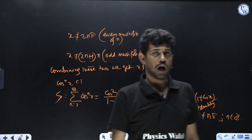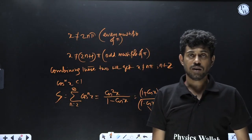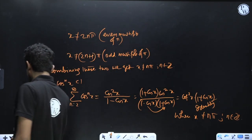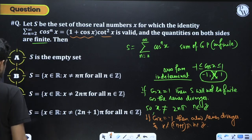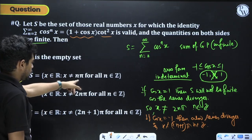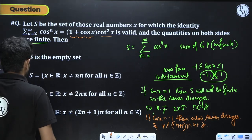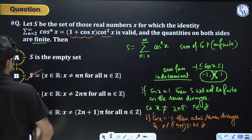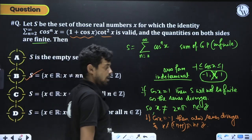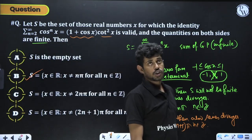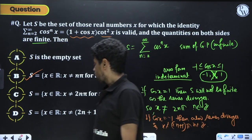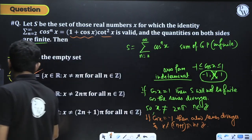The identity holds when x ≠ nπ. So the answer is x ∈ ℝ, x ≠ nπ — option B is the right answer.